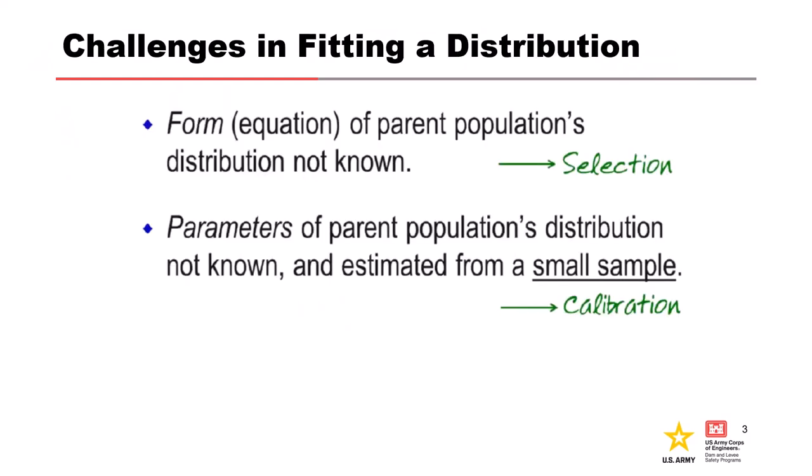All right, so the form of a parent population's distribution is not known. So what distribution should we select to represent it? So once we select a distribution, the parameters of the parent population's distribution are not known, but we have to estimate them, usually from a pretty small sample. And that is considered calibration.